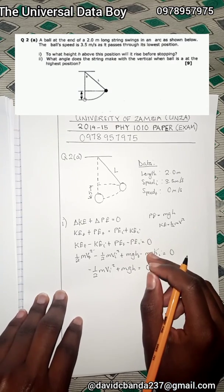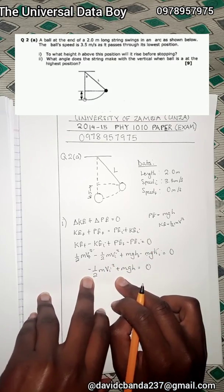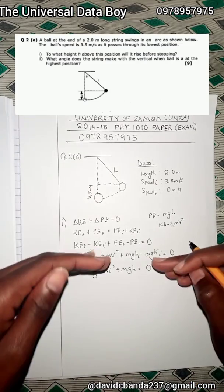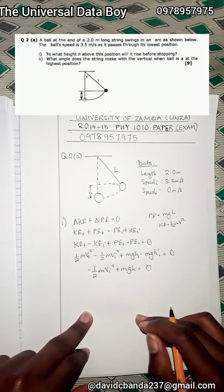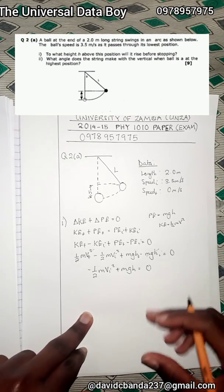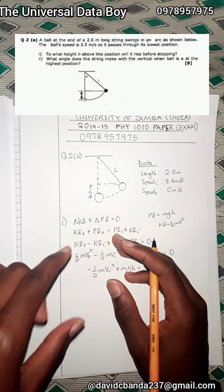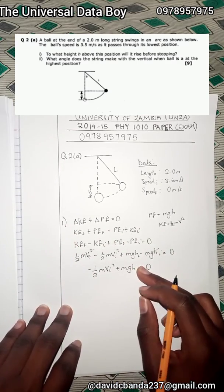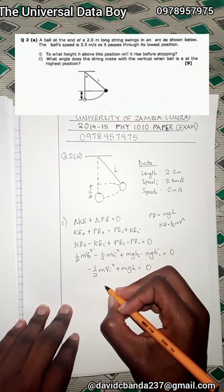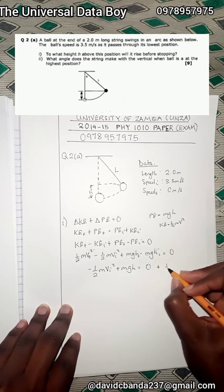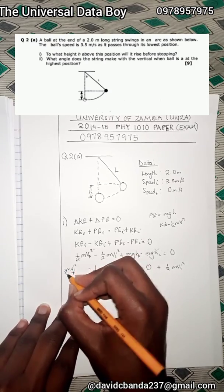I advise making h the subject of the formula rather than plugging in values immediately. When you make h the subject first, you get a symbolic answer that's correct all the way through, and if you make an arithmetic error it only affects your final numerical answer — meaning you still get most of the marks. For a nine-mark question, this approach could earn you seven marks even with a calculation error.